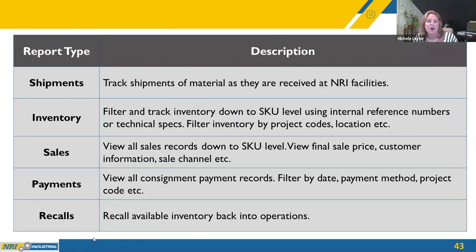Reporting and auditing is also provided in the consignment portal — you can track all shipments, inventory, sales, payments, and recalls. The recall function is very popular with clients: if you send an item and then discover you need it back in your operations, at the click of a button you can recall any item to any facility. Using your own reference numbers, you plug that in and the item immediately pops up. The only associated cost is the shipping cost to its final destination.